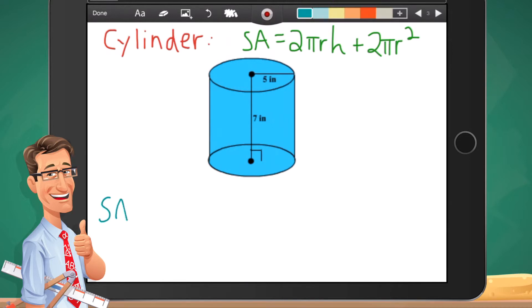So surface area is 2 times pi is 3.14, times the radius in this case is that 5, remember it's halfway across the center of your circle, times the height, how tall it is, which is 7, plus 2 times pi again, times the radius squared. And once you have this stuff plugged in, you can type this in your calculator and it should give you the answer you're looking for.